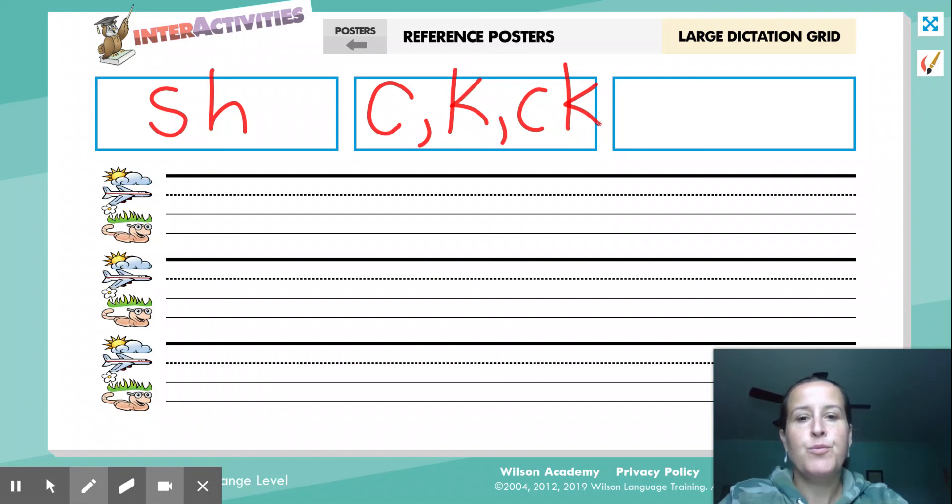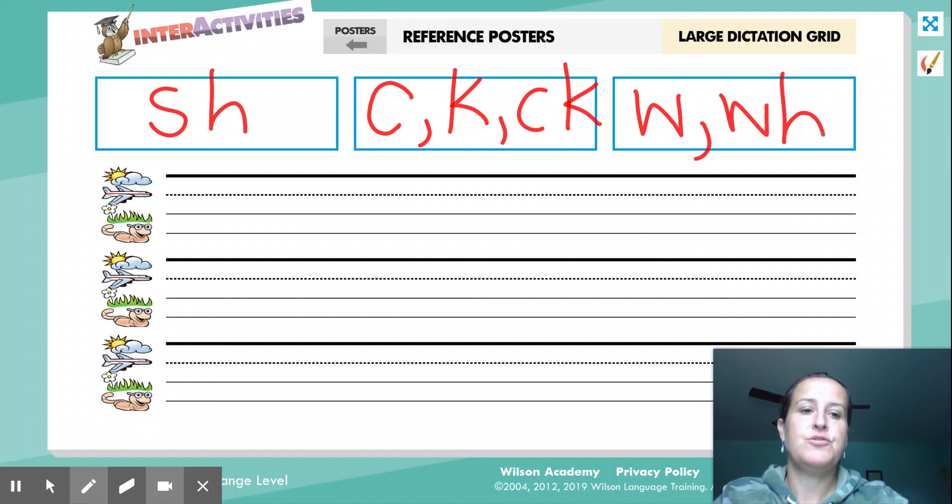All right, now we're going to work in the third box, okay? Echo after me and tell me the letters that spell w. That's right, Mrs. H talked about the letters that spell w. Right, so we've got w and wh. It's hard to write on a computer. I totally understand. So just do your best to try and stay within the lines.